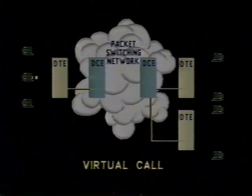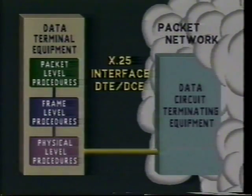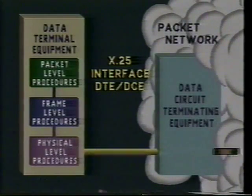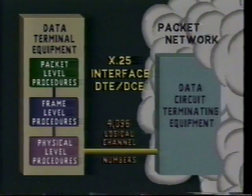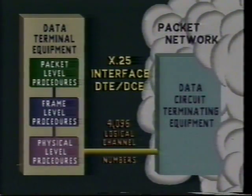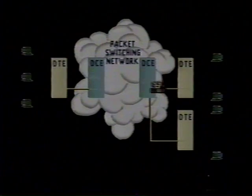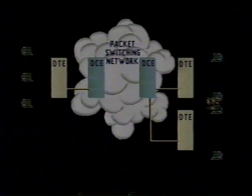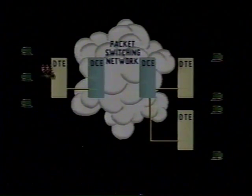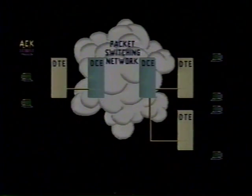During the virtual call, your data is placed in information frames according to the network's maximum number of bytes allowed per packet and sent as data packets. Each link in a network can potentially carry up to 4,096 full-duplex channels, each identified by a logical channel number. For the duration of the virtual call, the packet level assures proper flow of data throughout the network by assigning sequence numbers to each packet sent. The packet level also prevents flooding by not sending more packets than the network's window size or buffer can handle at any one time. To make absolutely sure that information was received intact, the packet level demands an acknowledgement within a certain period of time — or else it will retransmit another copy of that data packet. No data is destroyed until the sender receives an acknowledgement that the information was received without errors.